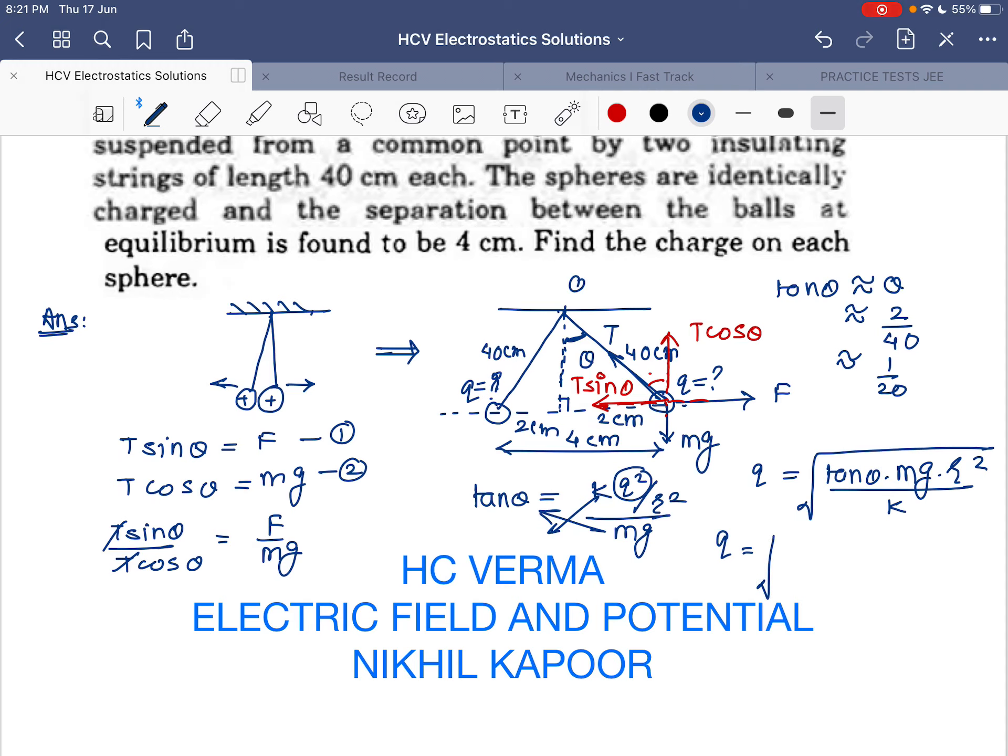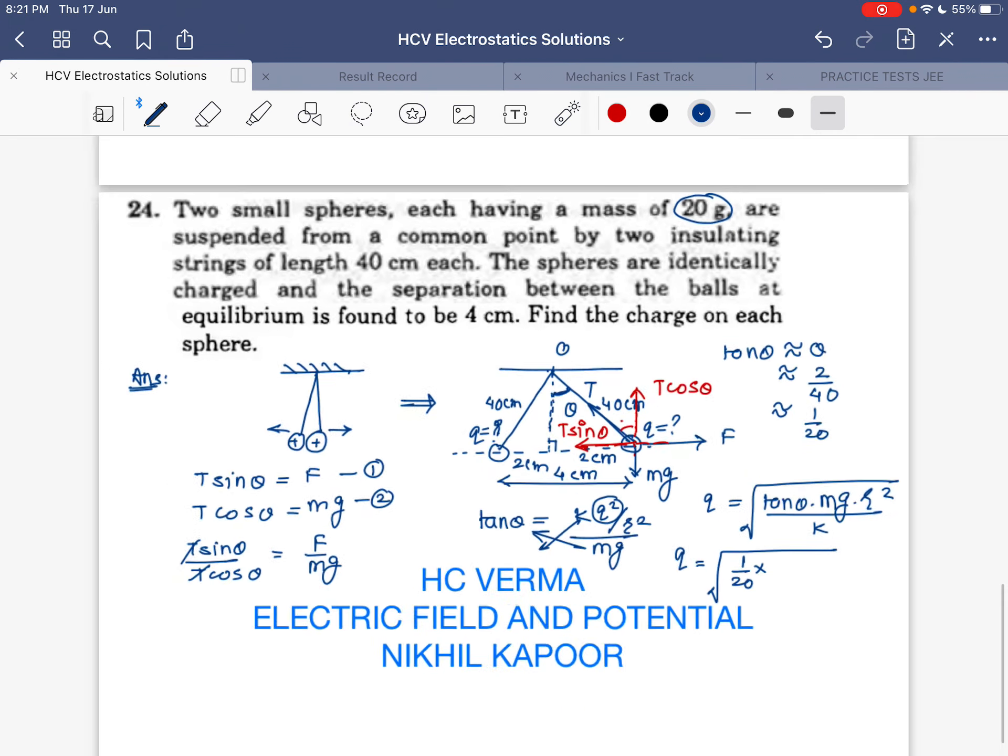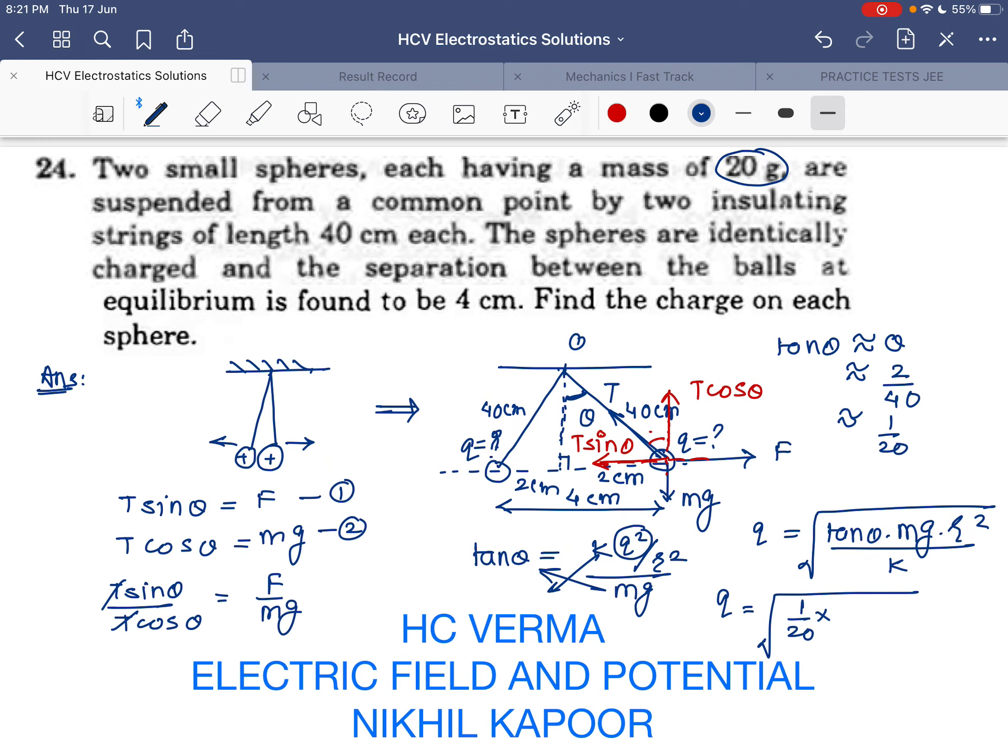I will put the values now. The value of tan theta is 1 over 20 times mg. The mass is 20 milligrams, so I can write 20 times 10 to the minus 3 kilograms times g which is 10, times r. The distance between the charges is 4 centimeters, and it's r squared, so I'll take r out of the root and that becomes 4 times 10 to the minus 2 meters divided by 9 times 10 to the power 9. The 20's cancel out.